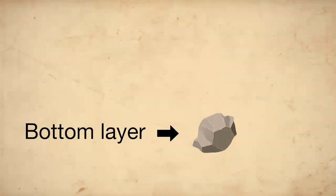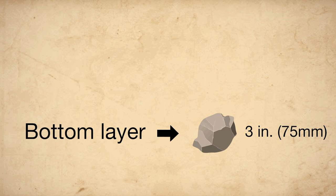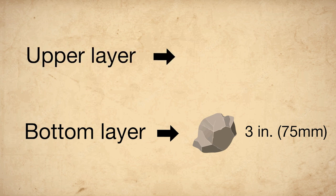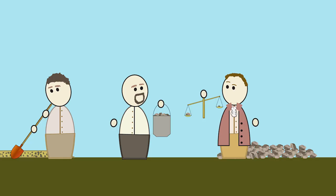The lower McAdam layer stones had to be no larger than 3 inches, and the above layer had to be exactly 2 inches. McAdam was so anal about stone size that he required supervisors to walk around with scales, measuring the size of stones before they were used to build roads.